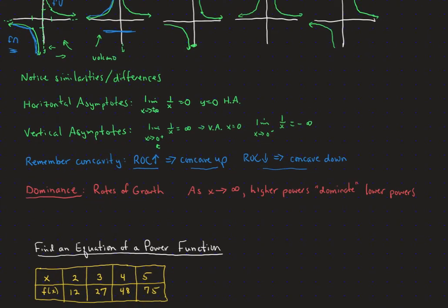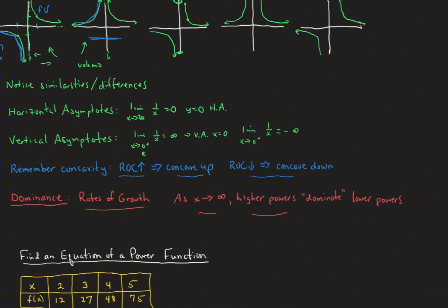Now we have the idea of dominance, also known as rates of growth, which we discuss quite a bit in AP Calculus. As x goes to infinity, something with a higher power is going to dominate the lower power — it grows much bigger, much faster. Even though something like x squared and x cubed both get big pretty fast, once we cross over into positives, x to the third gets much bigger much faster than x to the second. That's what we mean by dominance — a higher order of magnitude function.